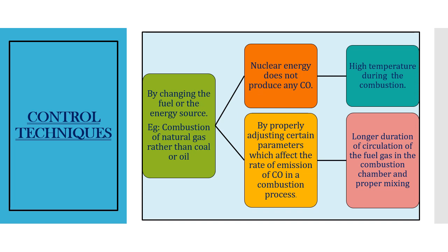Operating at high temperature during the combustion process is another way by which combustion results in carbon dioxide, which is less toxic than carbon monoxide. We can also adjust certain parameters that affect the rate of CO emission — for example, recycling of fuel allows a longer duration of circulation of the fuel gas, so there is enough time for oxygen to react, resulting in complete combustion and production of carbon dioxide rather than carbon monoxide.